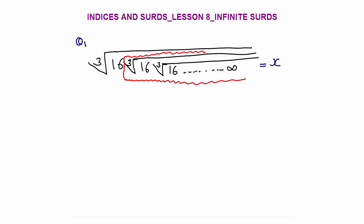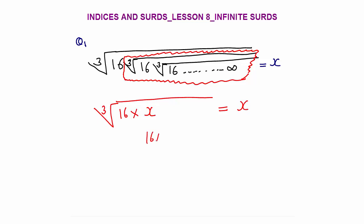The part I am circling in red — can I say that this part is also 16 cube root of 16 cube root till infinity? Since infinity minus one is the same as infinity, this inner repeating part is also x. So I can write the whole expression as: cube root of 16 times x, and this circle part is again x.